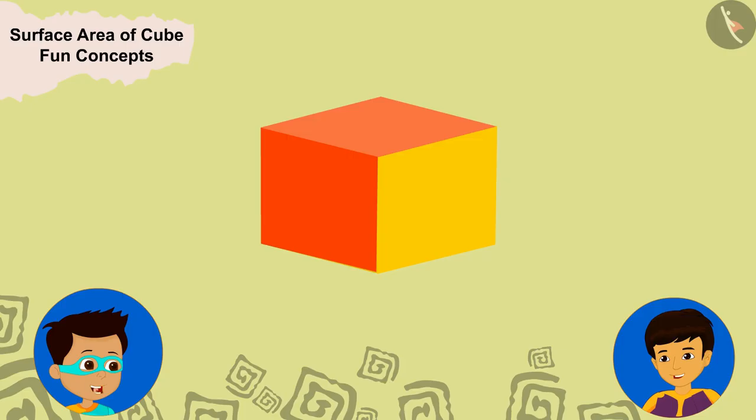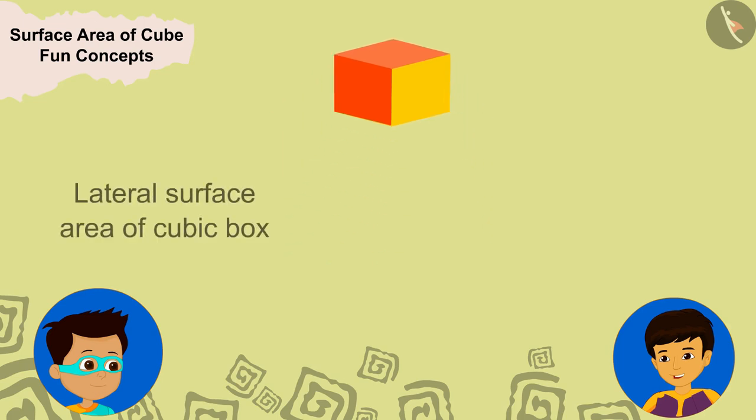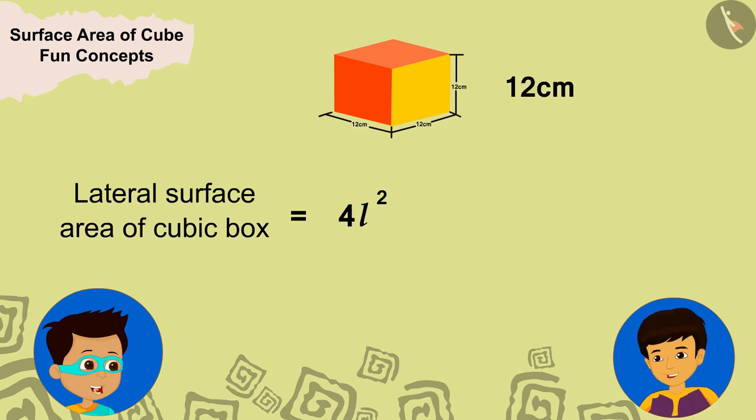Yes, of course. All these pieces are square and also congruent. This means that even in this orientation, the lateral surface area of the box will be 4l squared, where l is the length of the sides of the box, and the sides of the box are 12 centimeters in length.